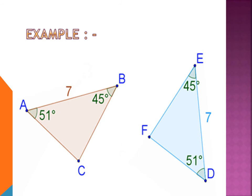So by ASA congruence rule, triangle ABC is congruent to triangle DEF.